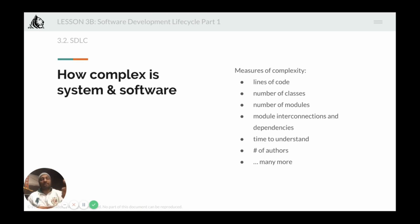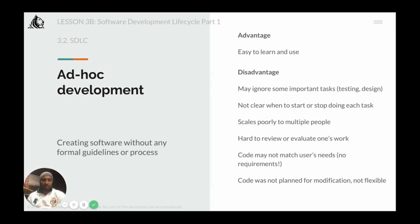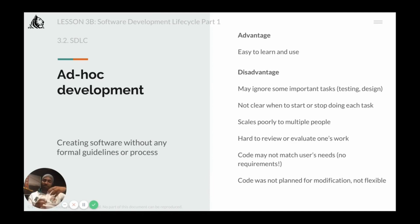Software complexity is measured in terms of lines of code, number of classes, number of modules, module interconnections, time to understand, and many more. It's important to grasp the notion of how complex the software is, which will help you understand how fast you can actually develop anything new. As you proceed further it will get more and more difficult to add new features, because adding them can result in certain other features getting affected.